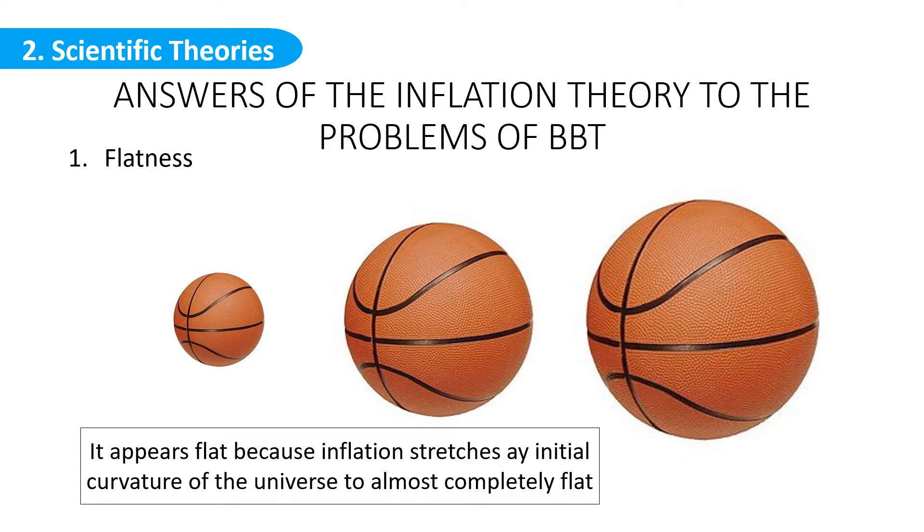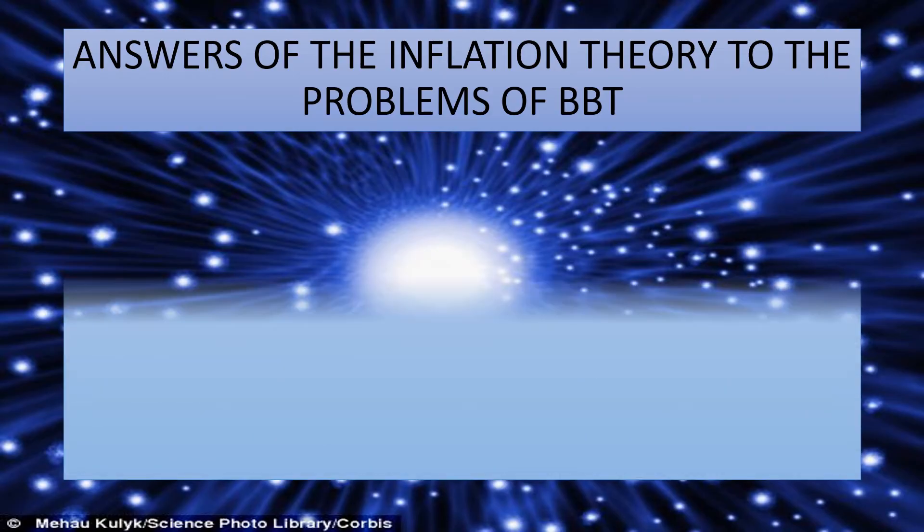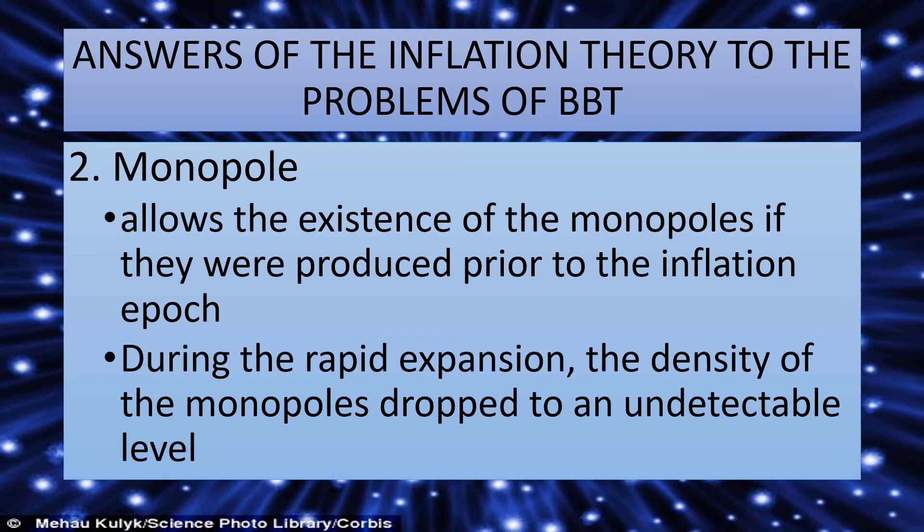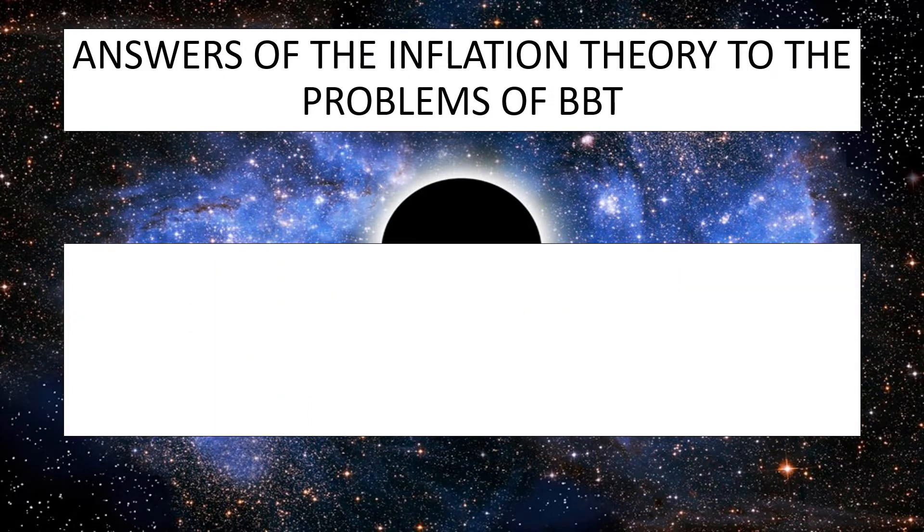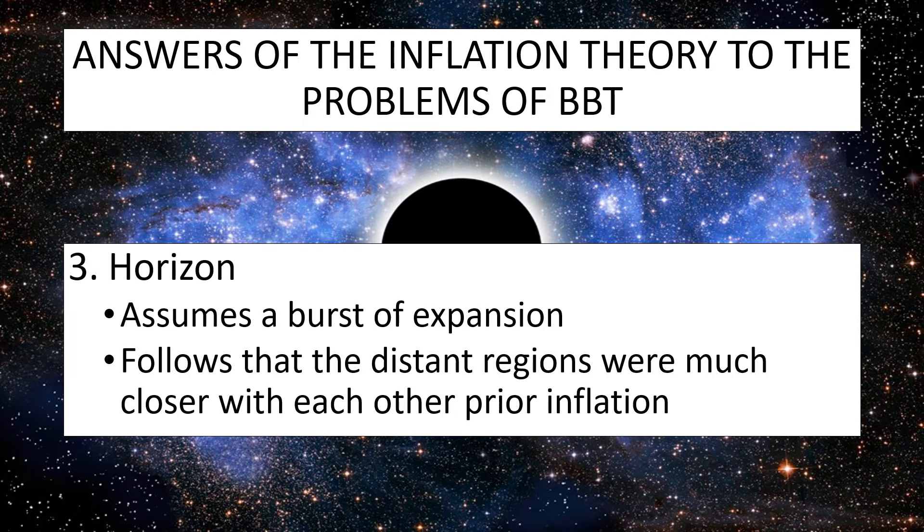The next problem is monopole. The inflation theory allows the existence of monopoles as long as they were produced prior to the inflationary epoch. During the rapid expansion, the density of the monopoles dropped exponentially to an undetectable level. Finally, we have horizon. The inflation theory assumes a burst of exponential expansion in the early universe, and it follows that the distant regions were actually much closer with each other prior to inflation.